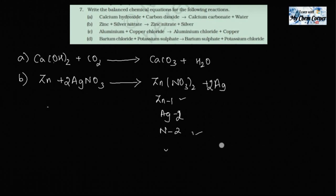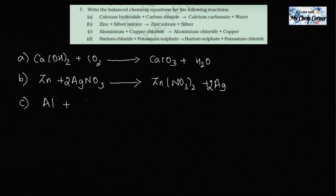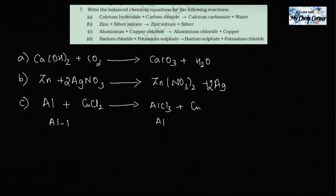Now let's move to the third one. Aluminium plus copper chloride — CuCl₂ — giving aluminium chloride plus copper. Putting down atom counts: Al is 1 on each side, Cu is 1 on each side, but chlorine is 2 on the left and 3 on the right — there's a discrepancy.